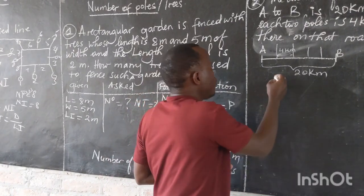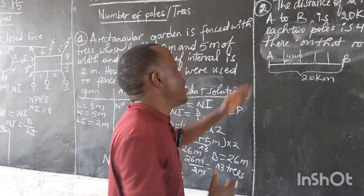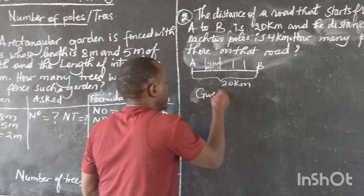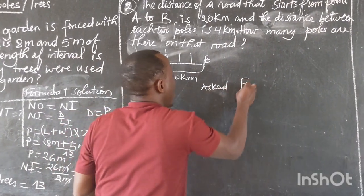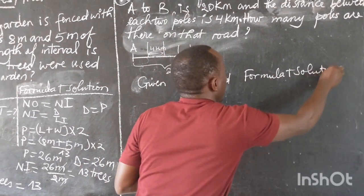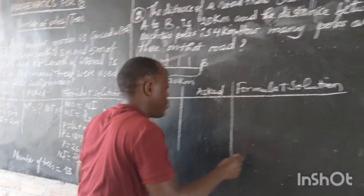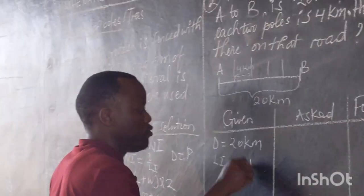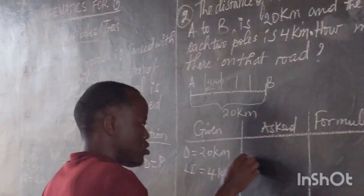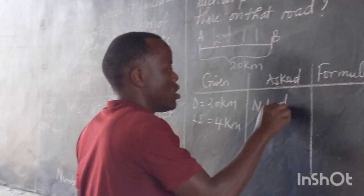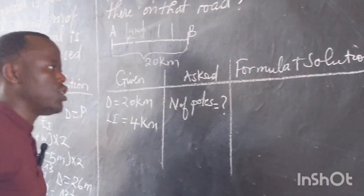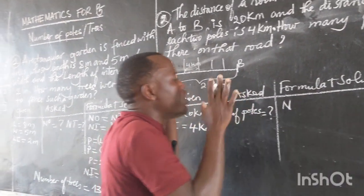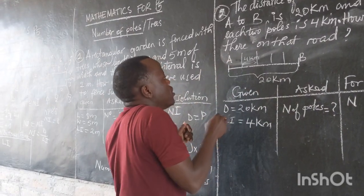We are going to see the number of poles on that road. We first draw our table with what is given, what is asked, and the formula plus solution. What is given: distance equals 20 kilometers, and length of interval equals 4 kilometers. What is asked: the number of poles. Before writing the formula, we first look — is that road closed or open? This is an open line.